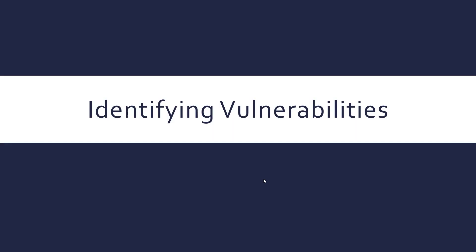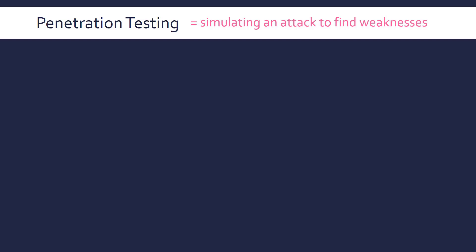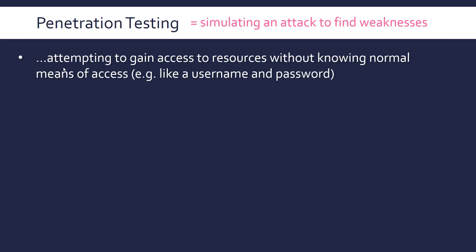So far we've talked about threats to networks. Let's now move on to talk about identifying vulnerabilities, and after that we'll talk about some measures to protect networks. Penetration testing is a very important process when determining system security. This is simulating an attack in order to find weaknesses. In the testing process you attack your own system to find any weaknesses that exist. The whole simulation of an attack is you trying to gain access to resources without knowing the normal means of access, pretending like you're coming from an external source.